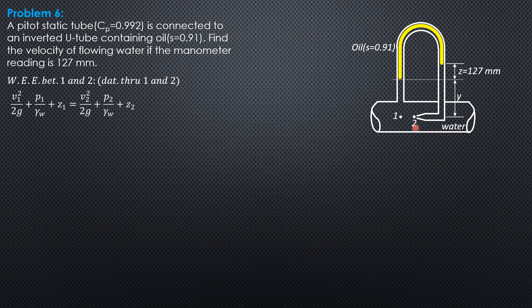Elevation head at 2 is also zero. The computed value here is not yet the final answer because there is a coefficient, so we will adjust the calculated velocity at 1 by multiplying it by this coefficient of the pitot tube. So substitute.